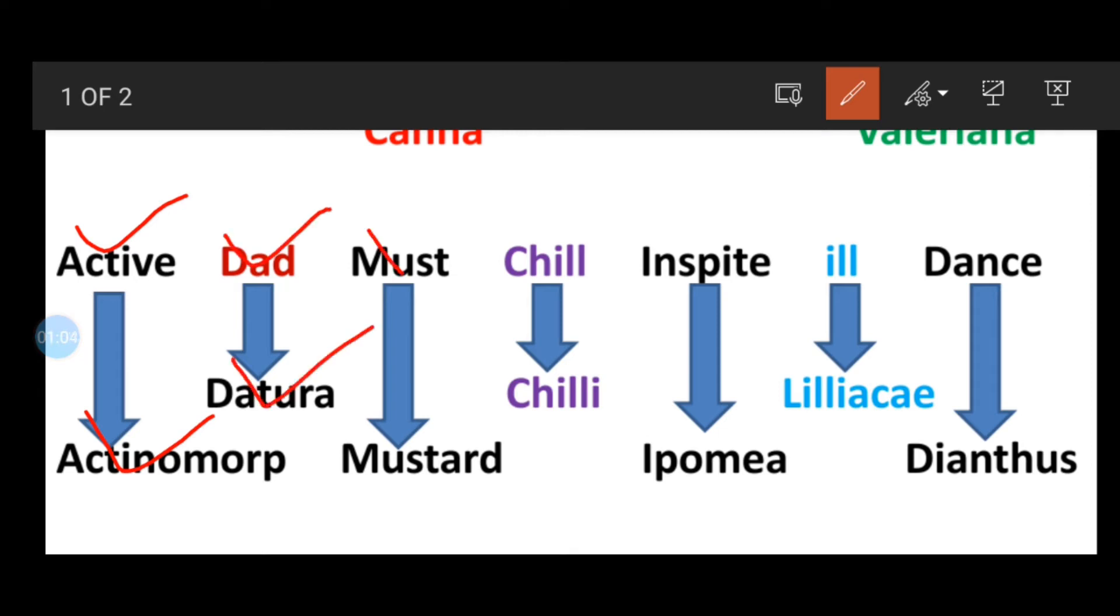Dad means Datura, must means mustard, chill means chili, and in spite means Ipomoea, ill means Liliaceae, and dance stands for Dianthus.